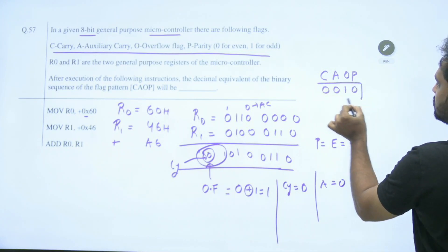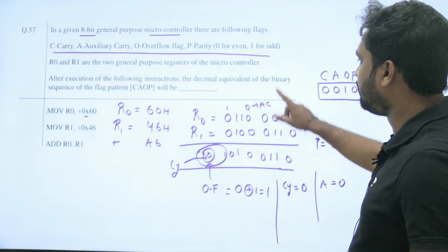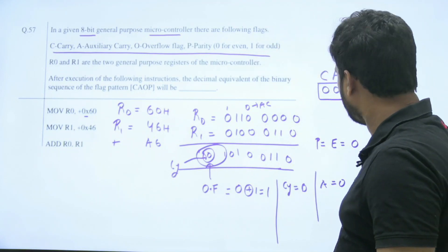So what is the answer here? Parity is 0 for even, so it is 2.